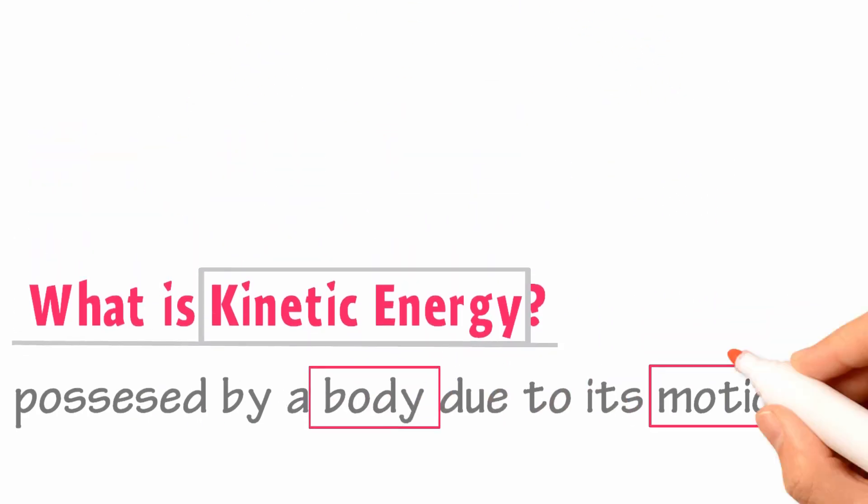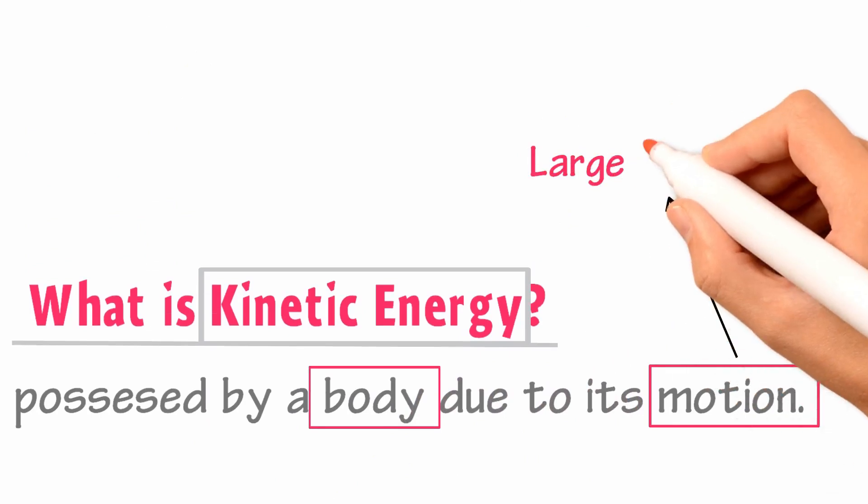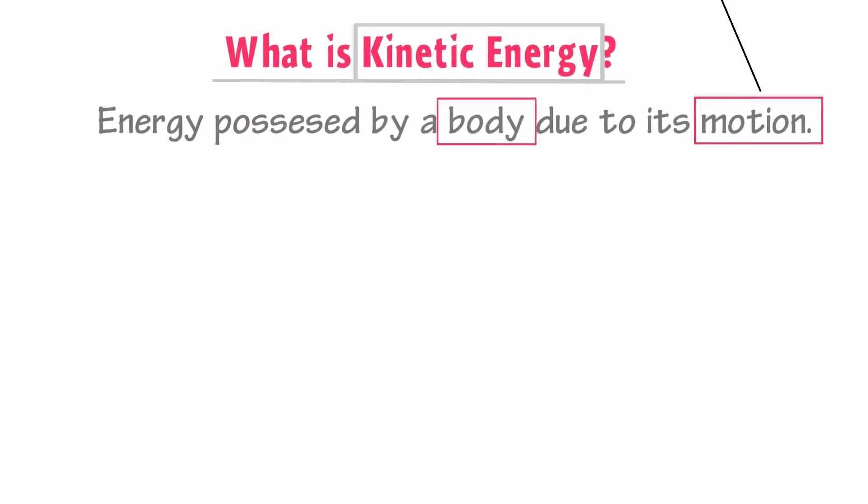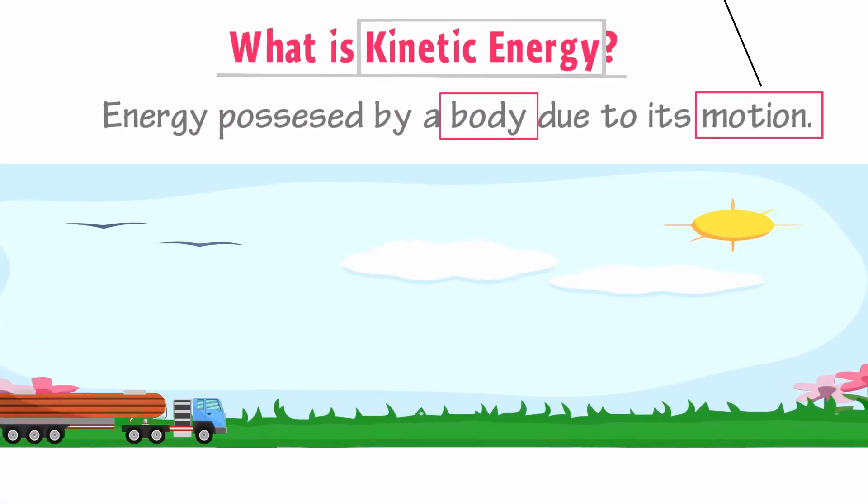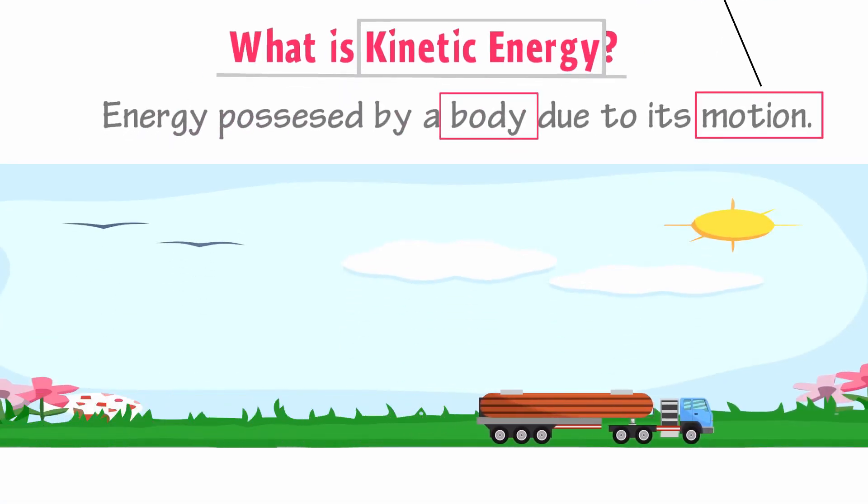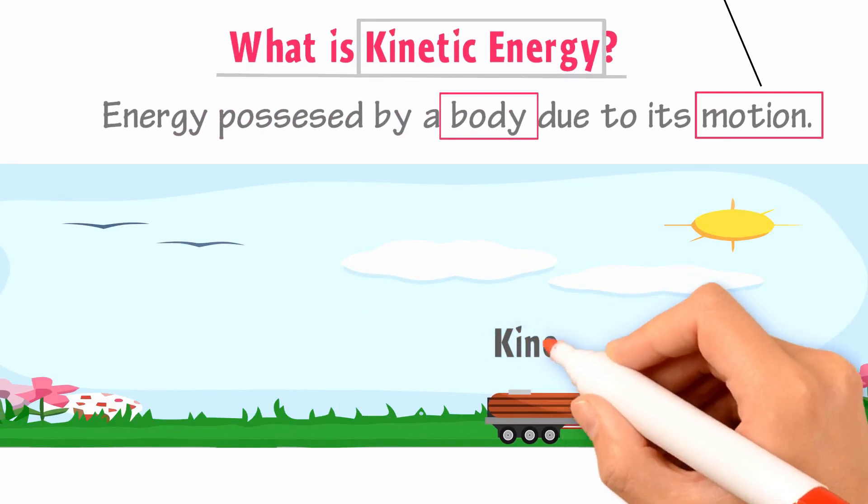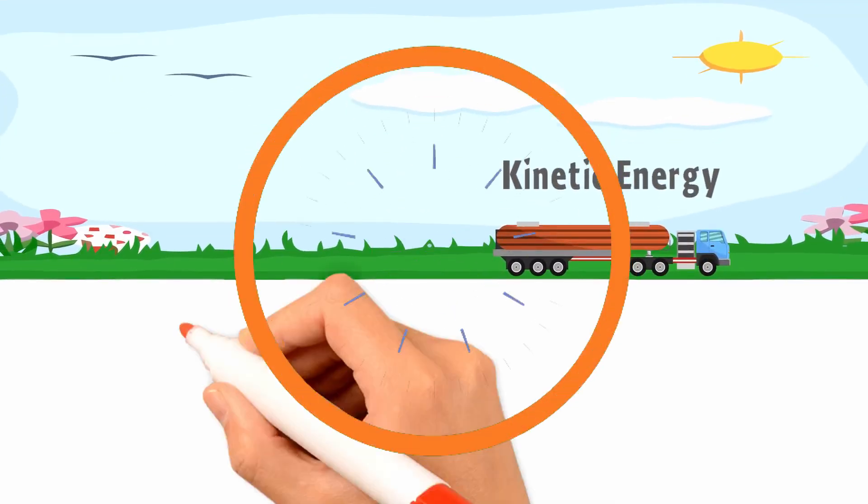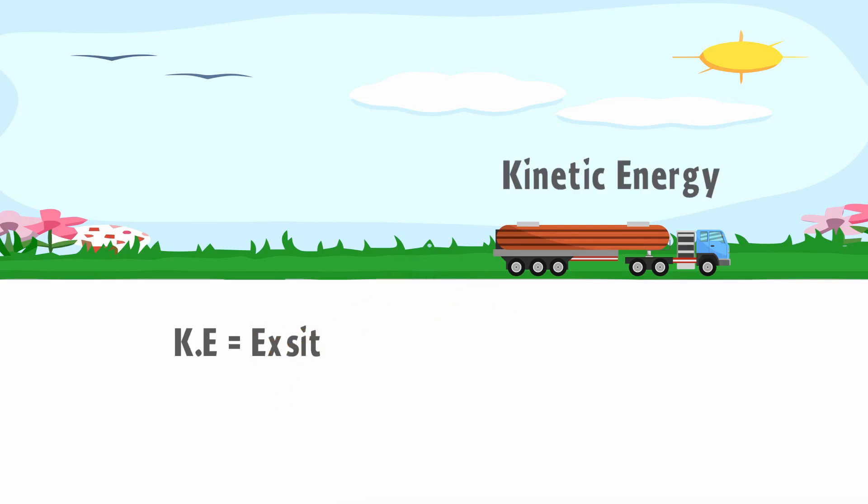Remember that by the motion of objects, we mean the motion of large objects. For example, a body is moving on the road. Then we say that this body possesses kinetic energy.